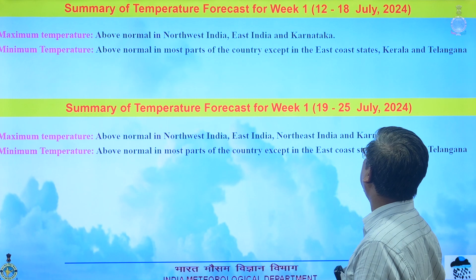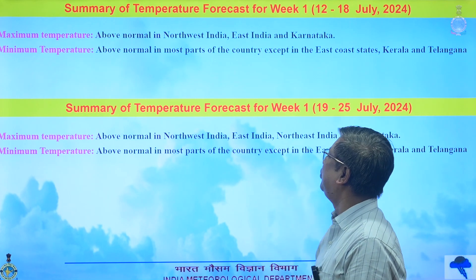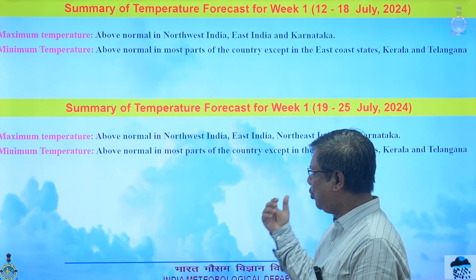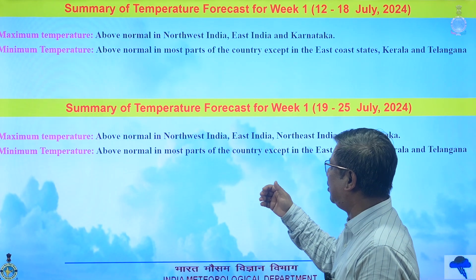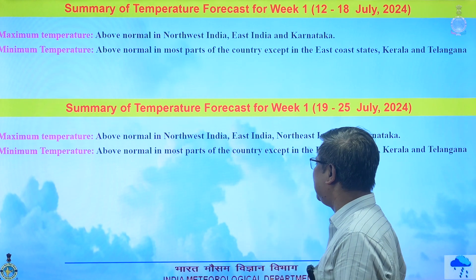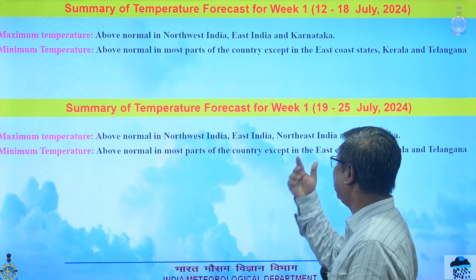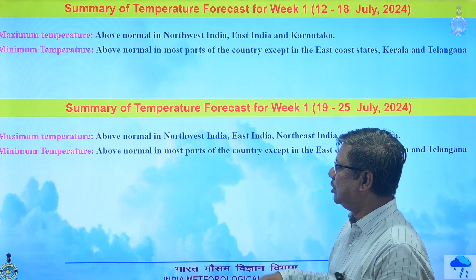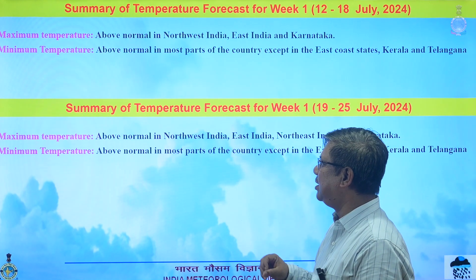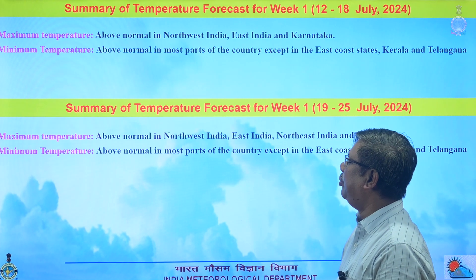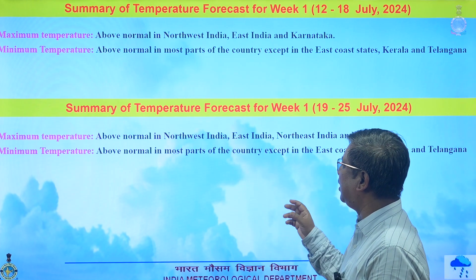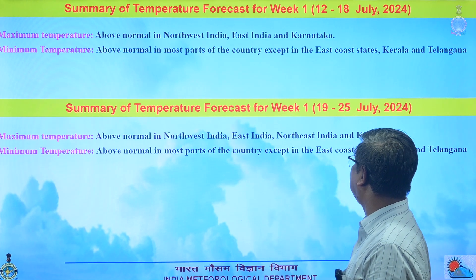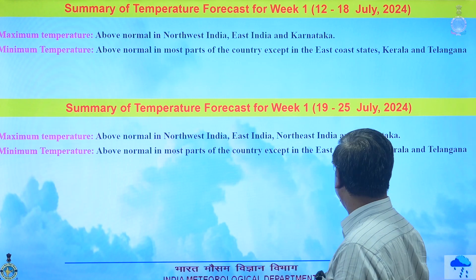Minimum temperature will be above normal in most parts of the country except east coast states, Kerala, and Telangana — this is for week one. For week two, maximum temperature will be above normal over northwest India, east India, northeast India, and Karnataka, and minimum temperature will also be above normal over most parts of the country except east coast states, Kerala, and Telangana.